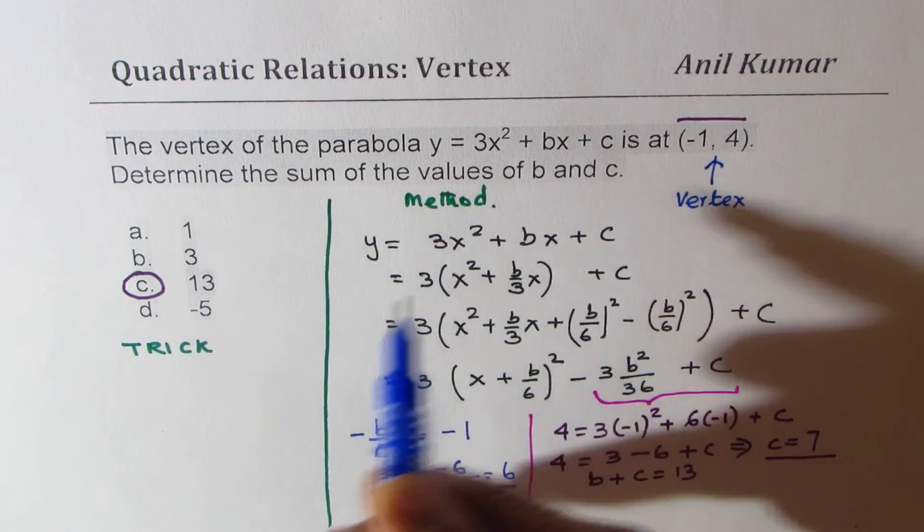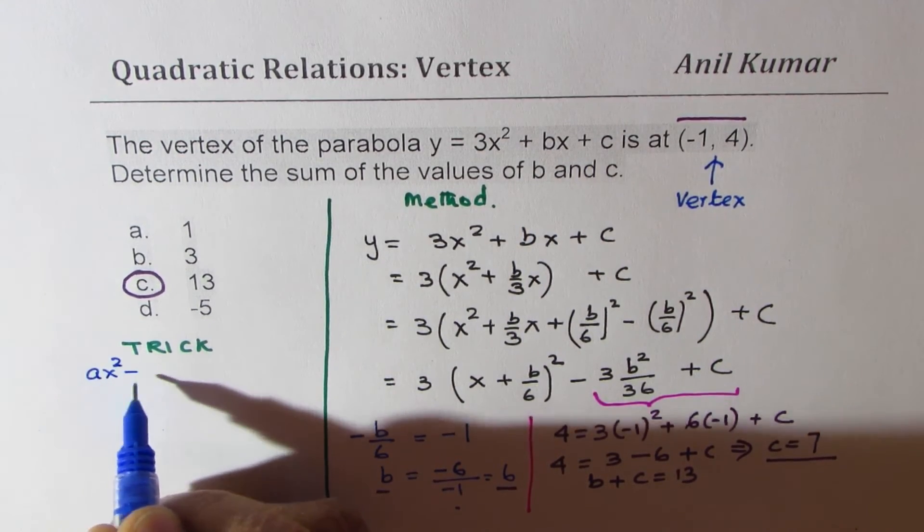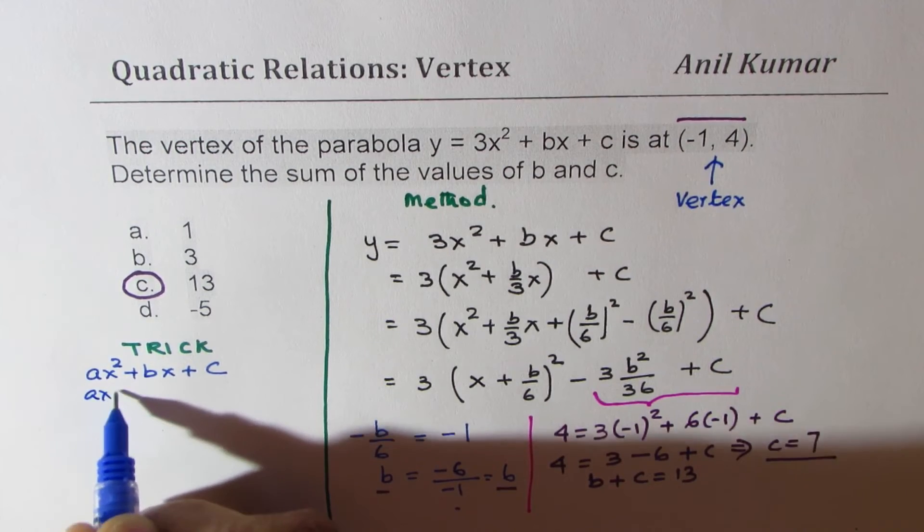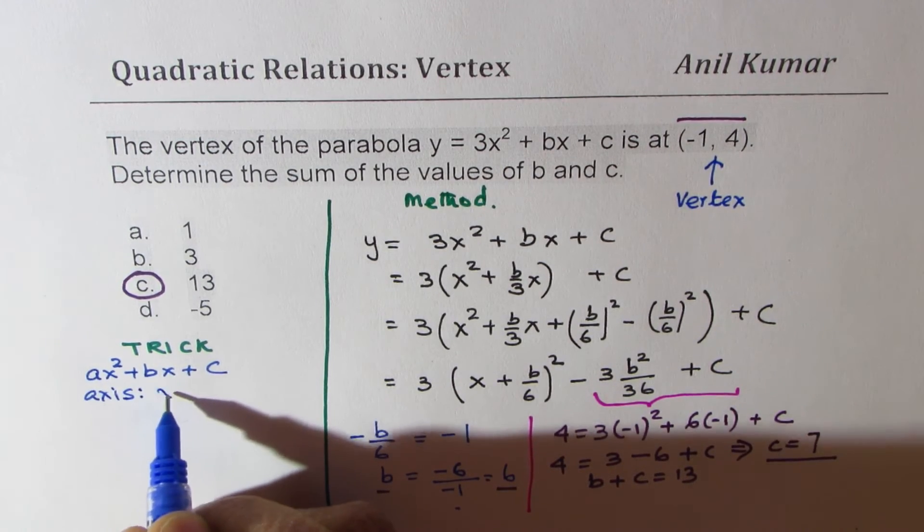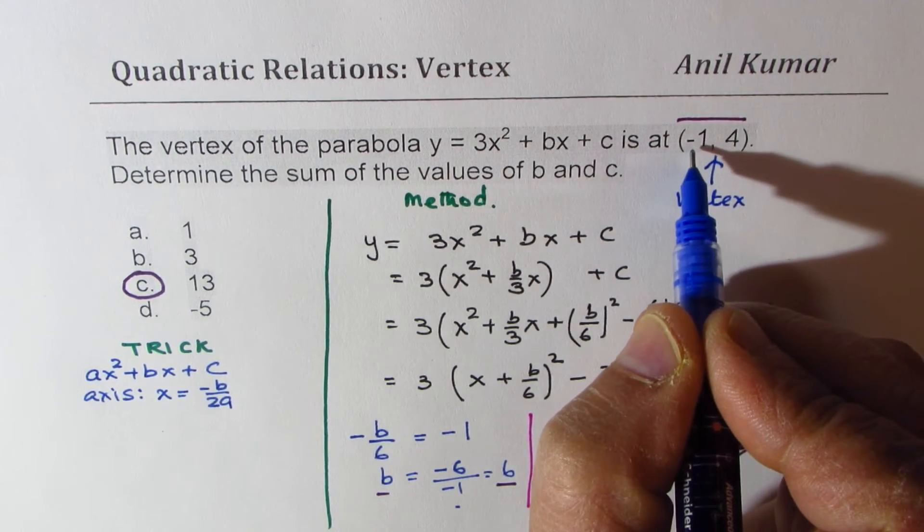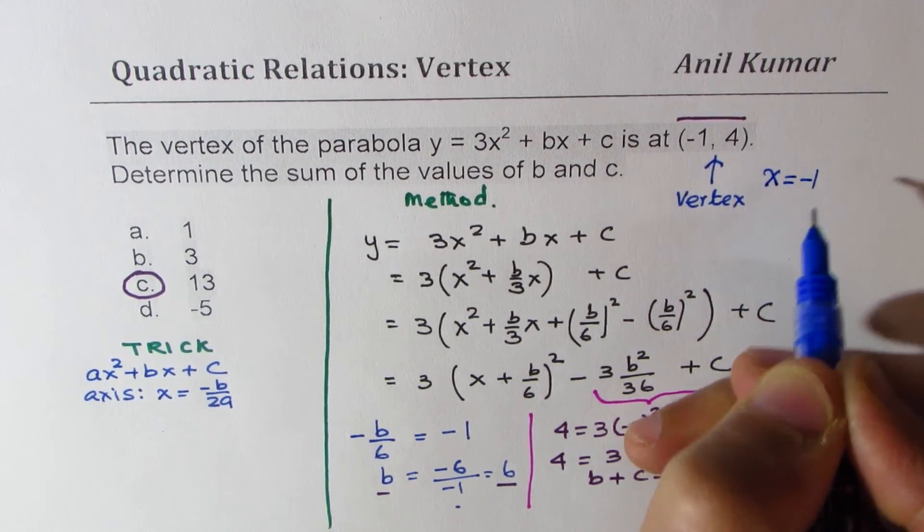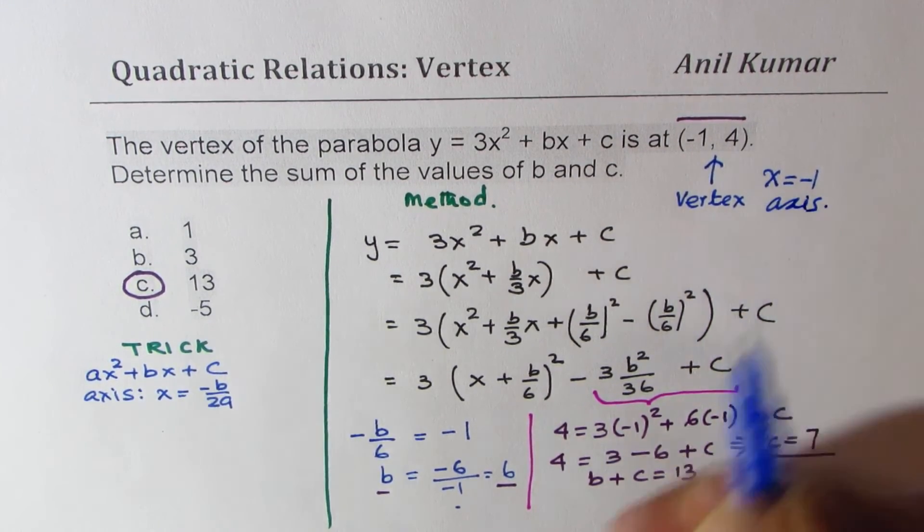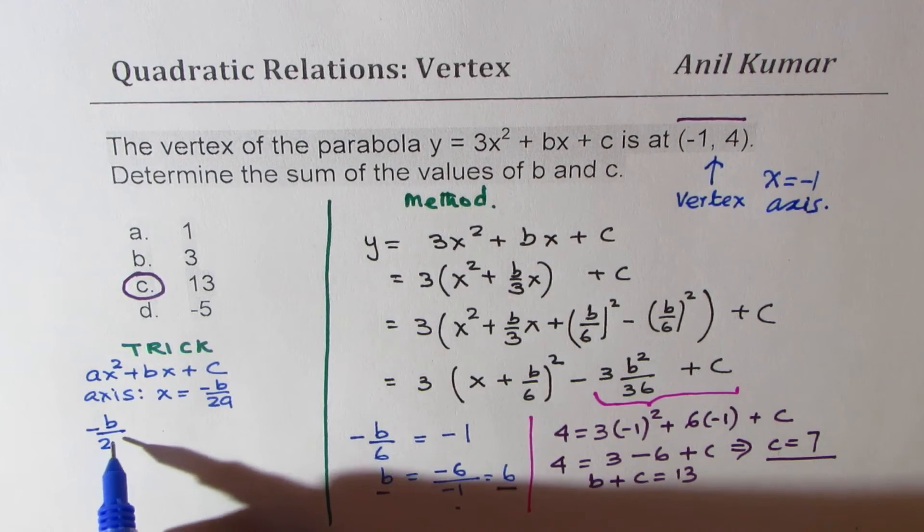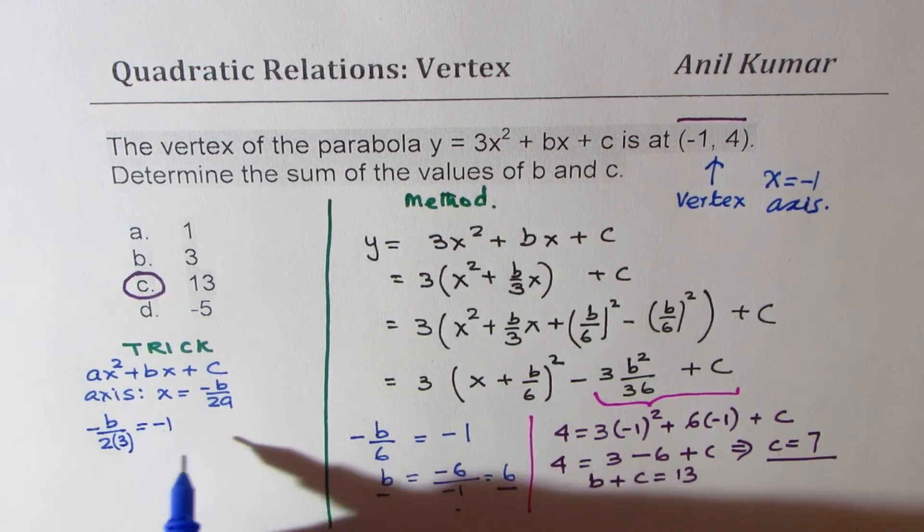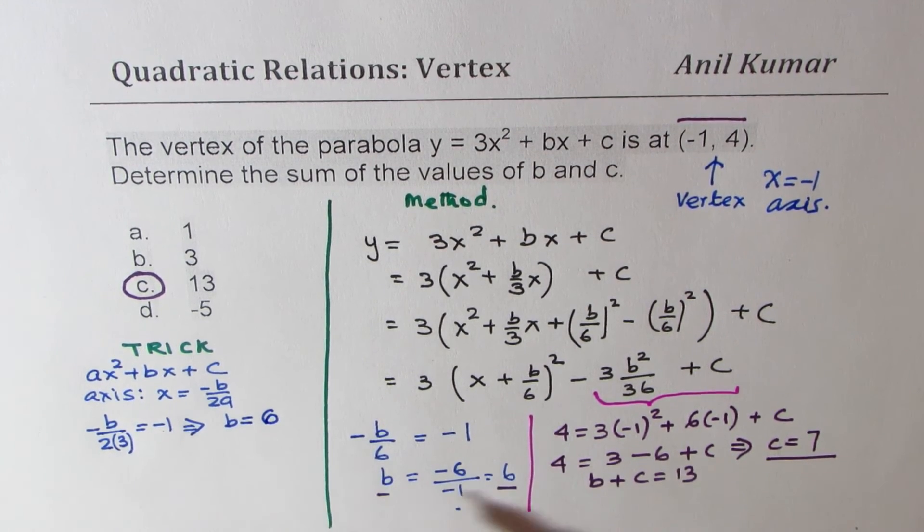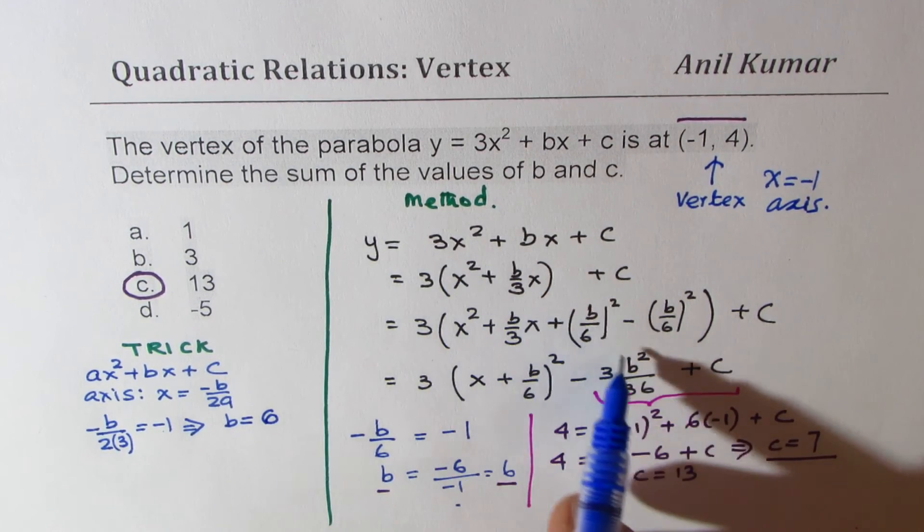Now, as far as the trick is concerned, whenever you have the equation of the form ax squared plus bx plus c, the axis is at x equals minus b by 2a. And in the vertex, minus 1 is the axis. So from here, you could write minus b by 2 times a is 3 should be equal to minus 1. And that gives you the value of b as equal to plus 6. So we straight away get the value of b without doing all this.